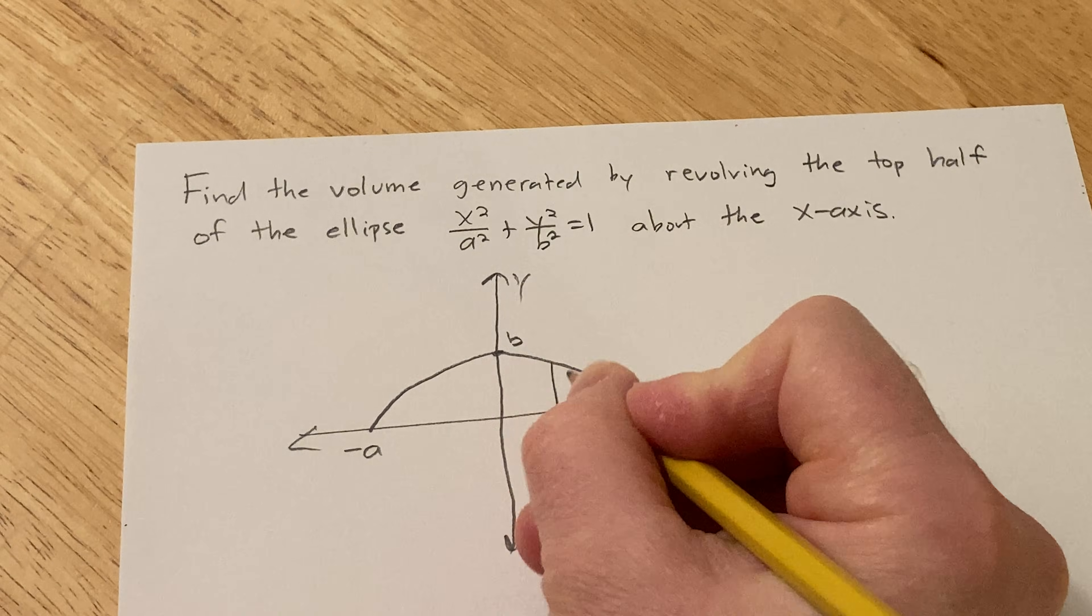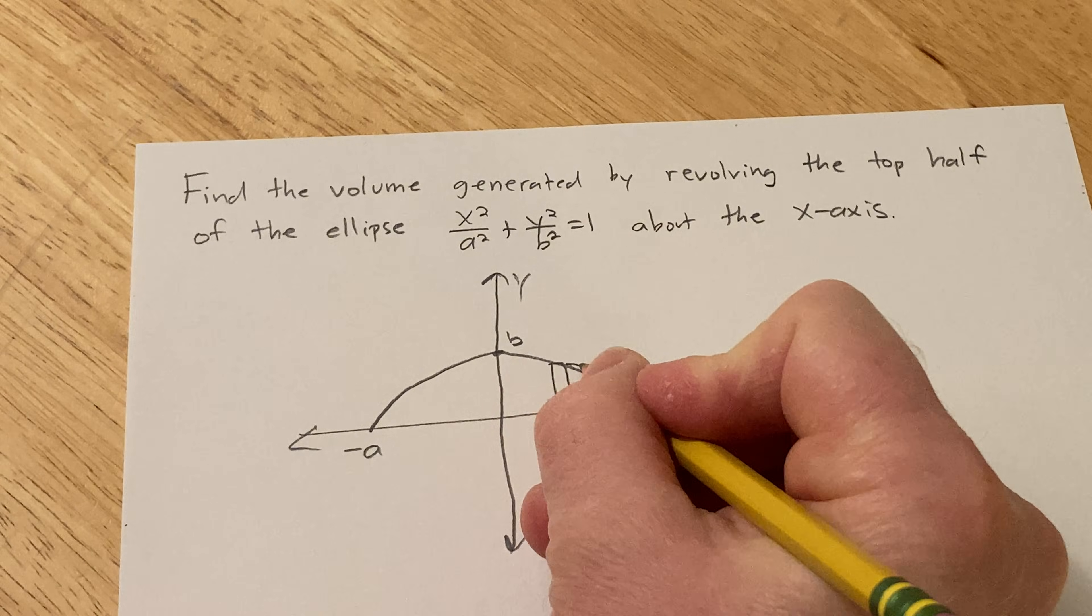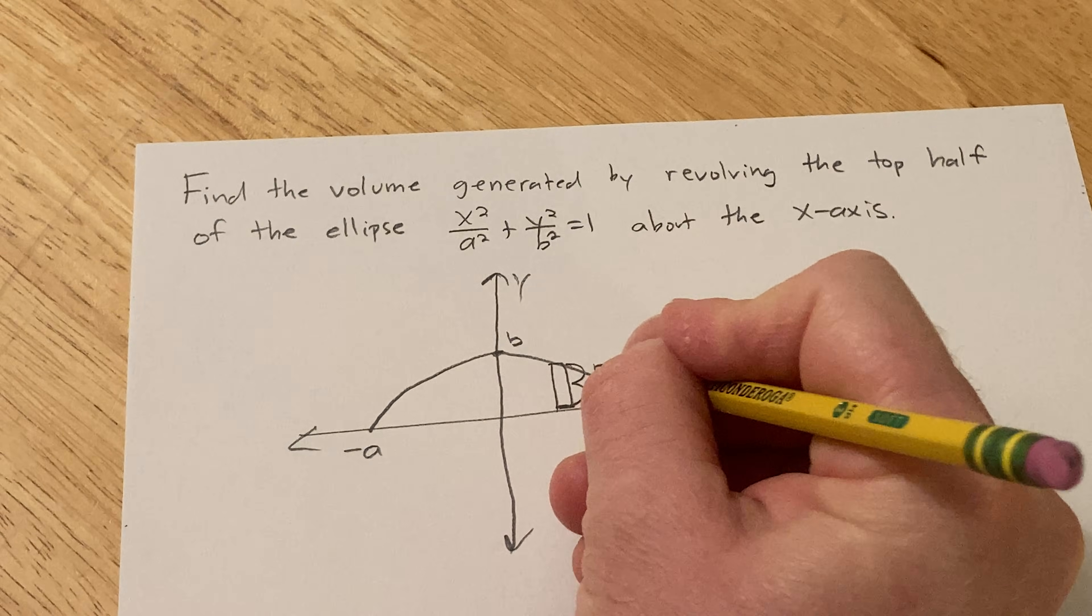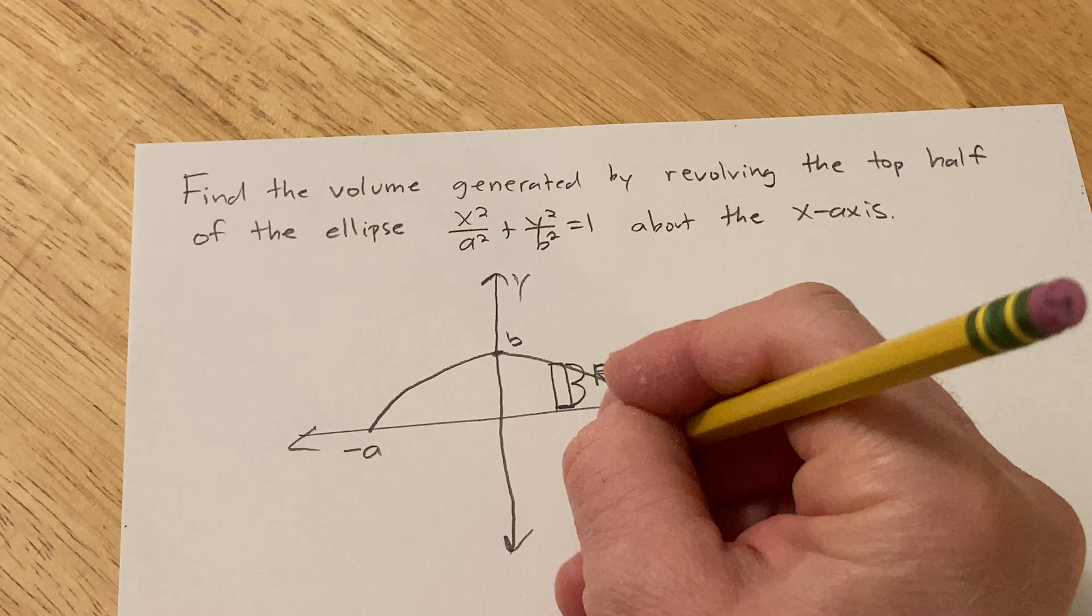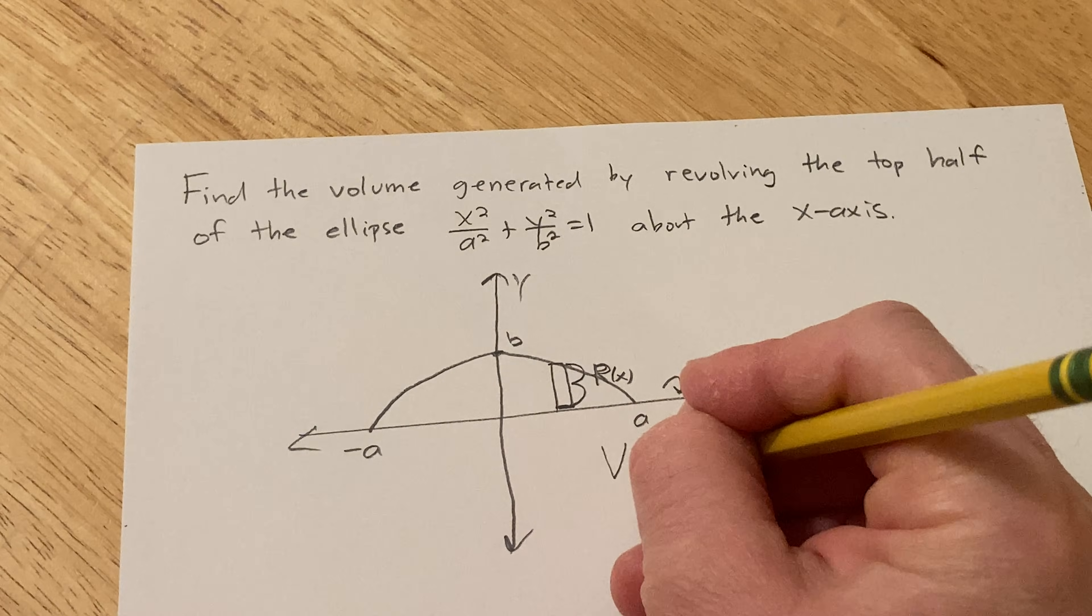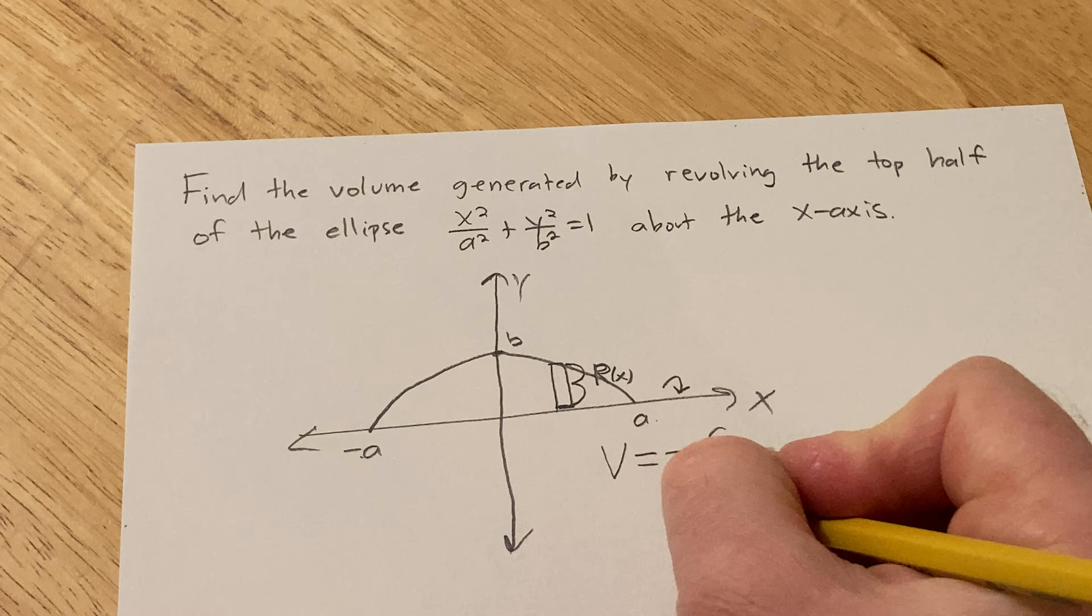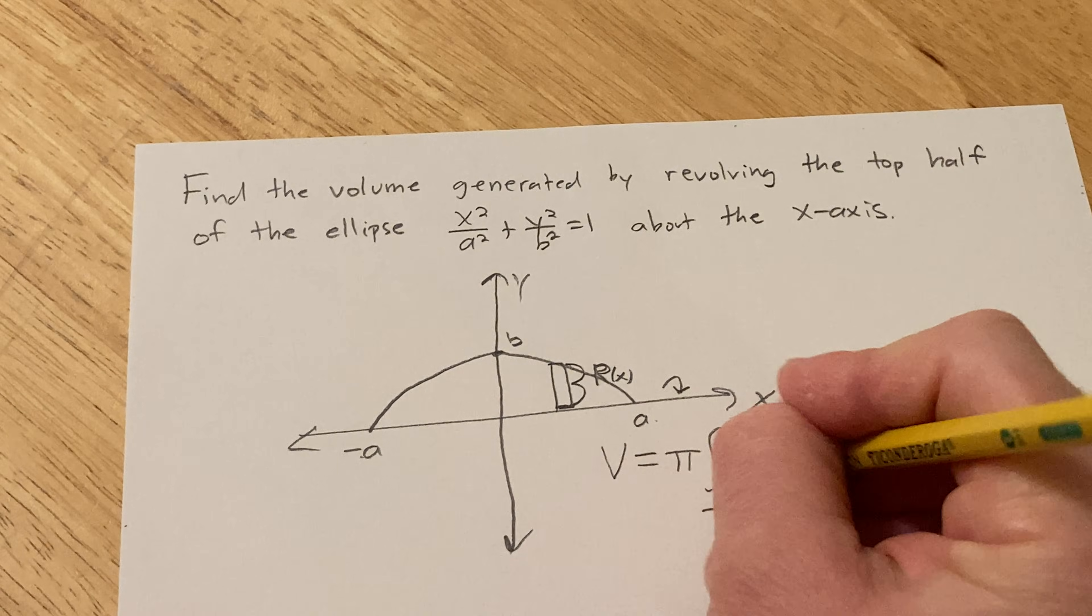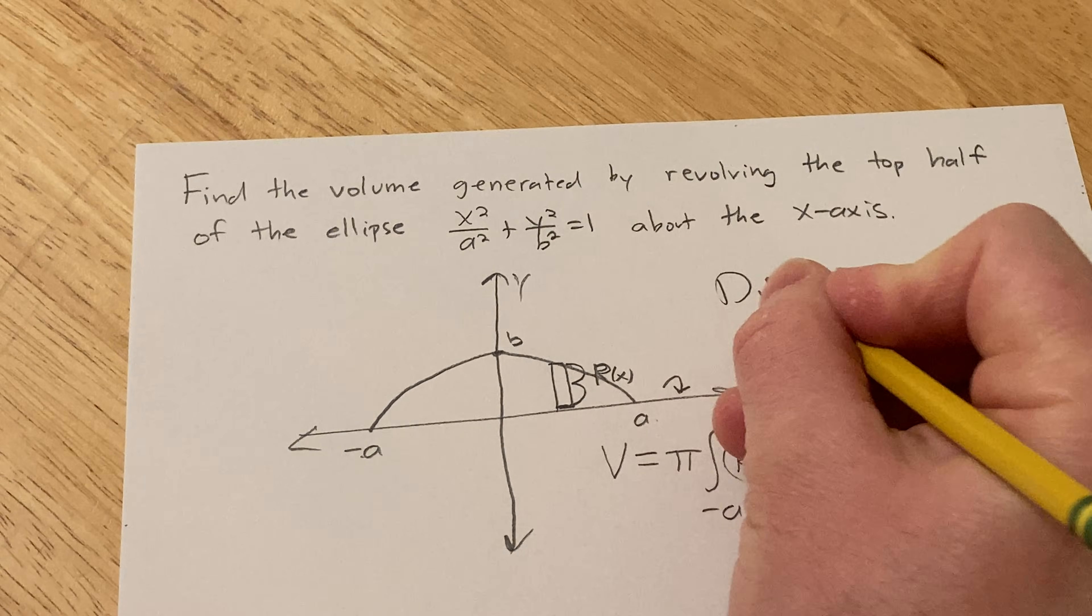So if we draw a rectangle here, we can use the disk method, and this here is going to be our big R, big R of x. It's a function of x because it's a vertical rectangle. And the volume here is given by pi, integral from negative a to a, of big R of x, quantity squared dx. This is using what's called the disk method.